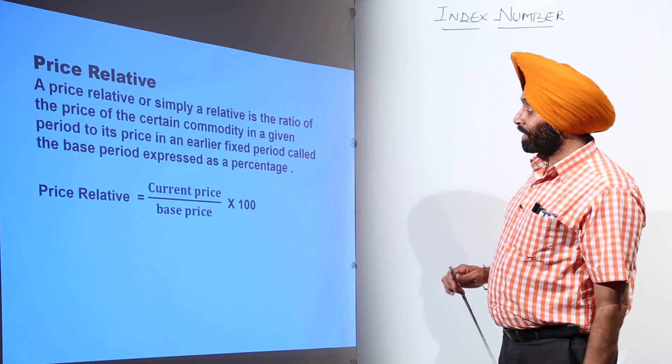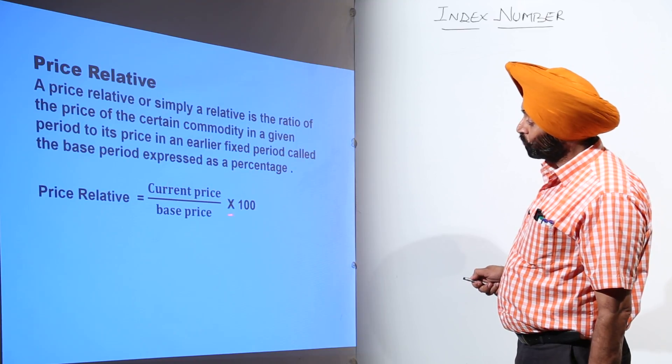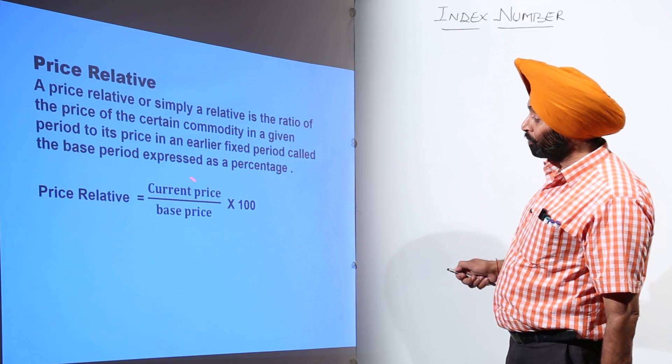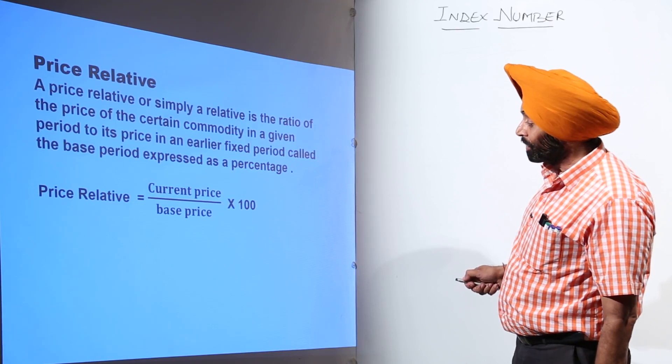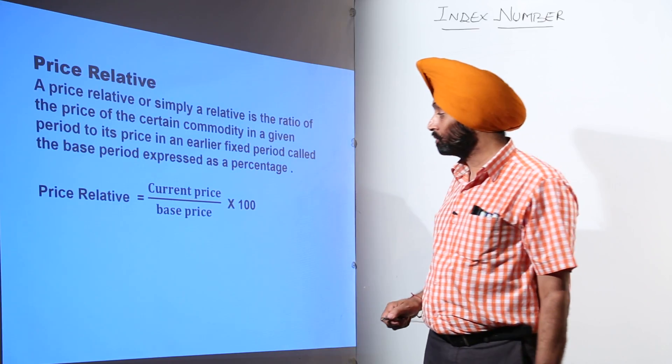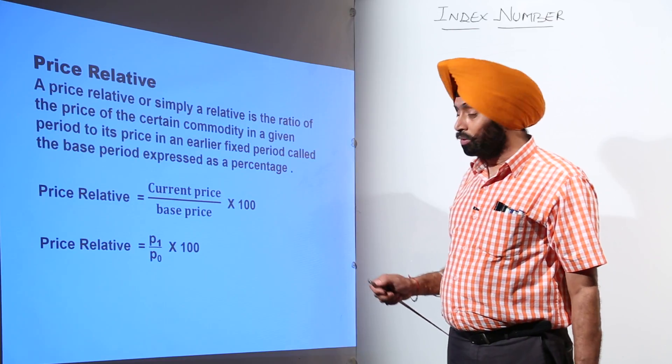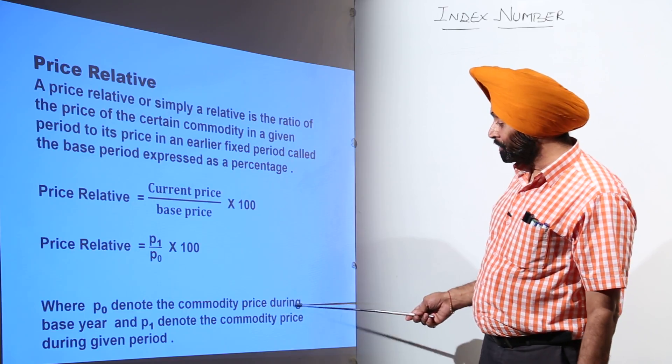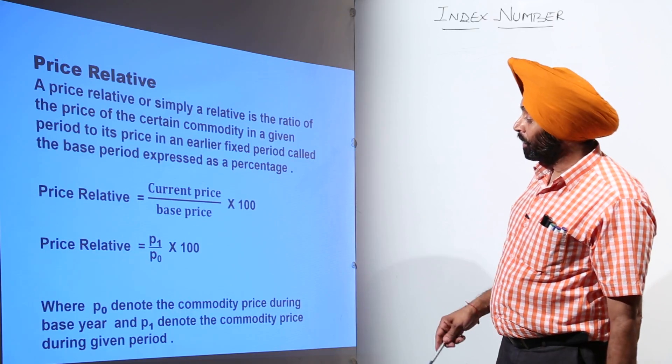Price relative is calculated as current price upon base price times 100. We introduce the current price with the symbol p1 and the base price with p0. So price relative equals p1 upon p0 times 100, where p0 denotes the commodity price during the base year and p1 denotes the commodity price during the given period.